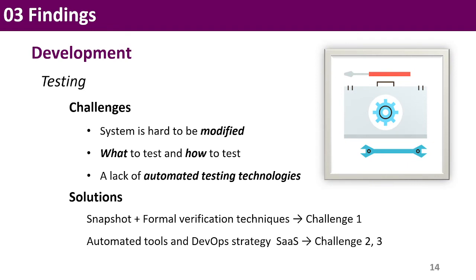The next finding is testing. The nature of a consulting blockchain makes it challenging to test the food supply chain system. First, it is more difficult to upgrade or modify the system. Second, it is a challenge to establish an agreement on what to test and how to test it. Third, automated testing technologies are still needed to efficiently support different levels of testing. For the first challenge, we can deliver a snapshot, and there is scope to utilize formal verification techniques. For the remaining challenges, automated tools and SaaS implementing DevOps strategy may be the potential solution, as they can provide an effective testing environment and support automated testing at different levels.